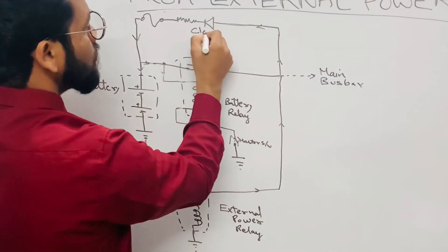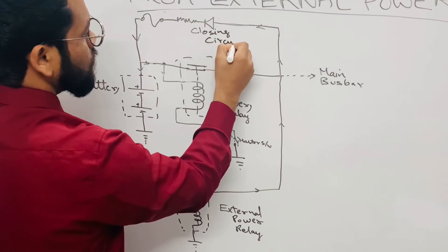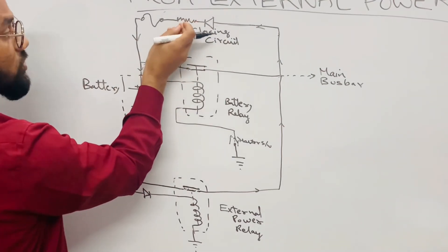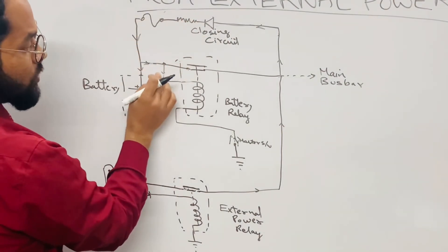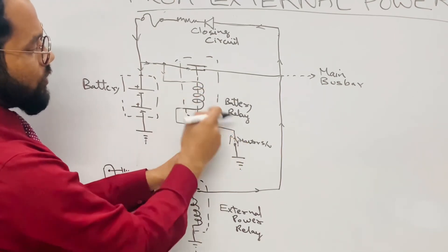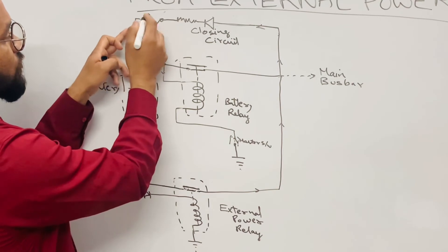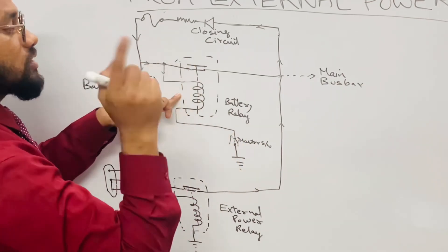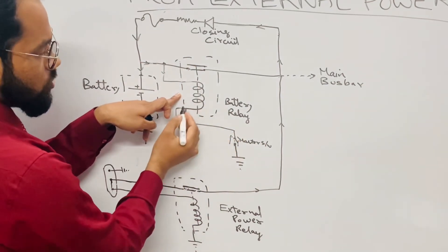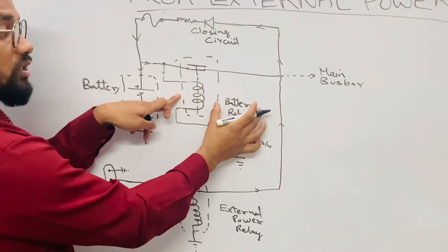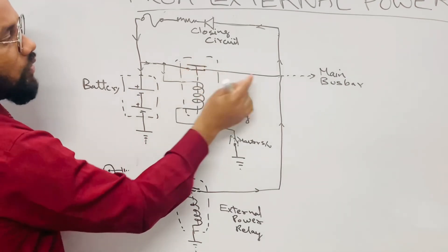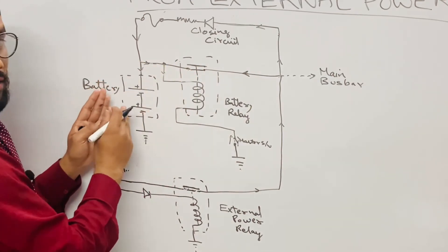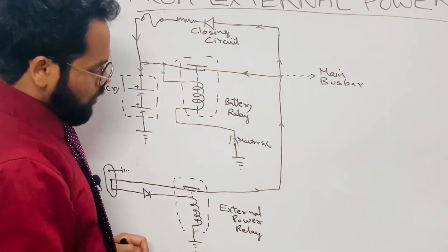Initially the battery relay contact is open, so current follows the closing circuit path — through a diode for a pure signal, then a resistor to cause voltage drop, a fuse for protection, and into the battery relay coil. Provided the master switch is closed, this coil gets its grounding path and the battery relay contact closes. Now the current coming from the external power follows this path and is given to the battery for charging.